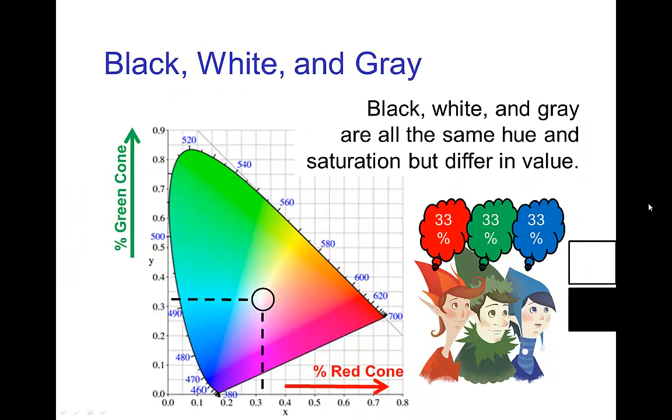You notice that in the CIE diagram, it only maps hue and saturation. We don't have value, value would be in another dimension. In this diagram, the center point is usually called the white point, but it is also the point for black and for gray. Black, white, and gray are all the same hue and they're all the same saturation, it's zero saturation. Black, white, and gray only differ in terms of value.